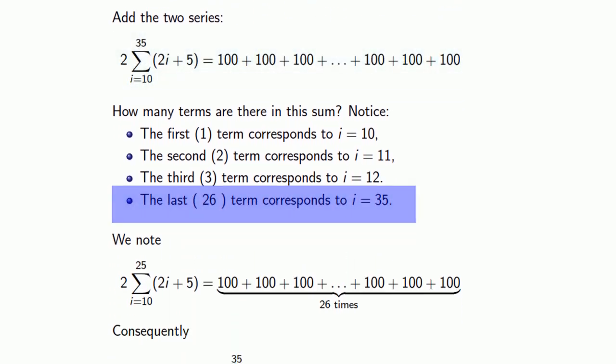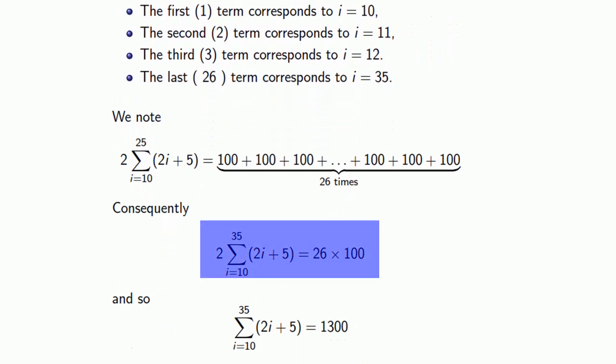And by adding everything together, found twice the actual sum. So we divided by 2 to get the sum itself.